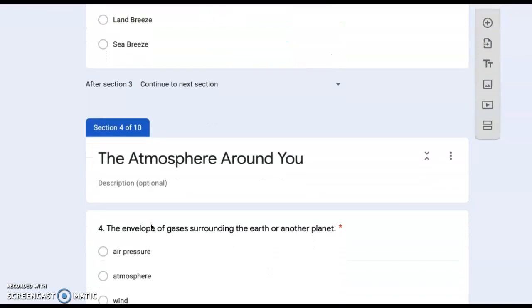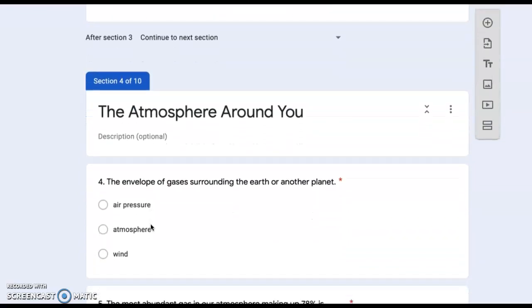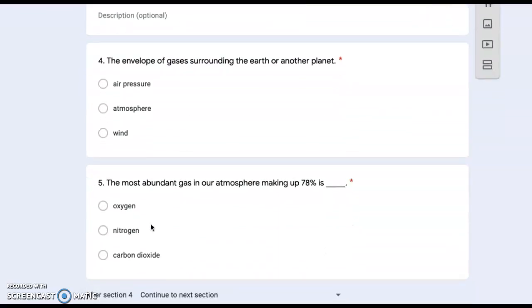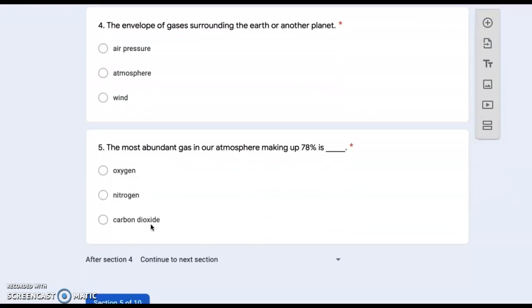The atmosphere around you. Number four: the envelope of gases surrounding the Earth or another planet. Air pressure, atmosphere, or wind? Number five: the most abundant gas in our atmosphere, making up 78 percent, is oxygen, nitrogen, or carbon dioxide?